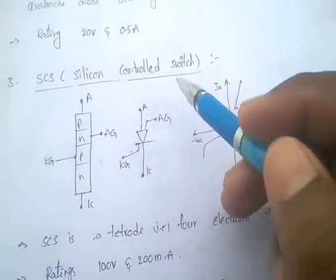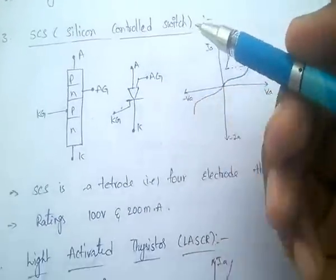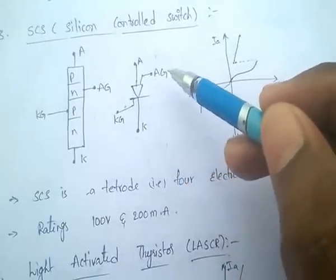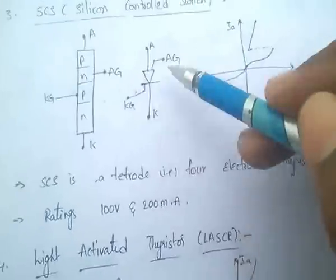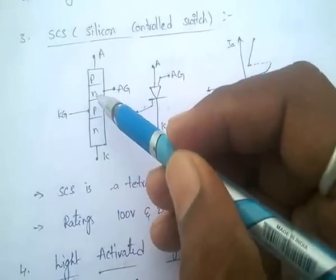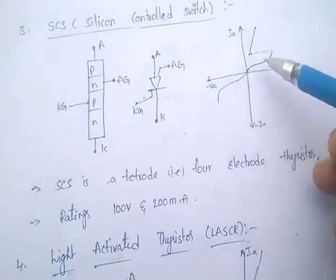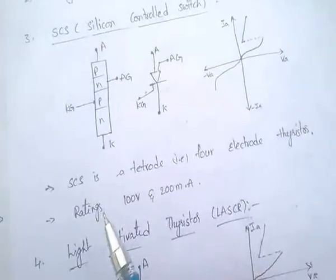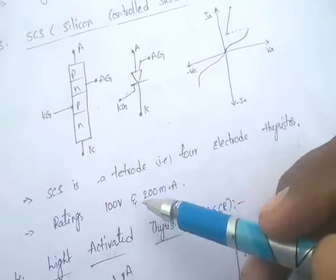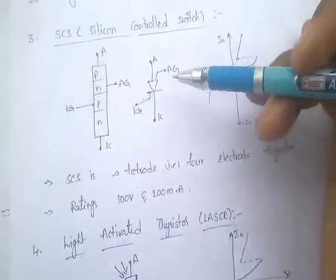Next device: SCS — Silicon Controlled Switch. This is a four-terminal device with anode, cathode, cathode gate, and anode gate. It has one gate signal from P-type and one gate signal from N-type — nearer to anode and nearer to cathode respectively. Ratings are 100V and 200mA. A four-electrode thyristor is essentially an SCR.